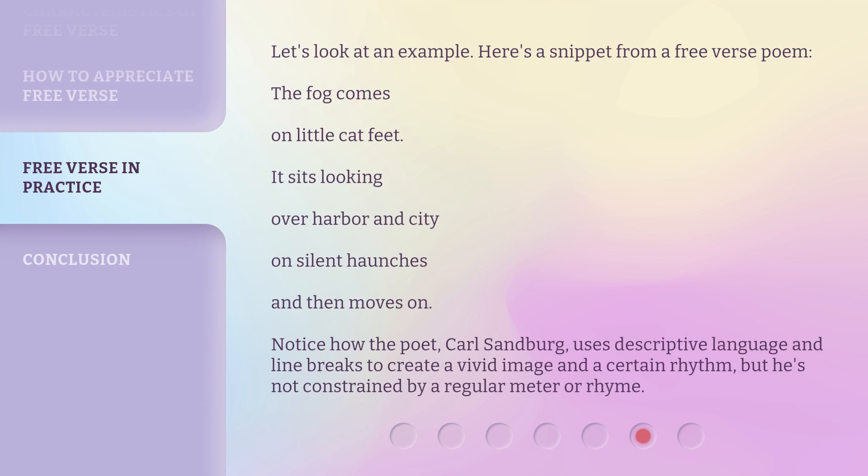Let's look at an example. Here's a snippet from a free verse poem: 'The fog comes on little cat feet. It sits looking over harbor and city, on silent haunches, and then moves on.' Notice how the poet, Carl Sandburg, uses descriptive language and line breaks to create a vivid image and a certain rhythm. But he's not constrained by a regular meter or rhyme.